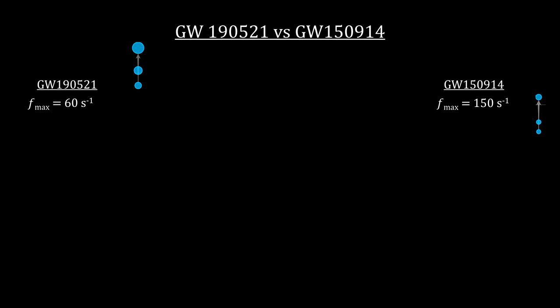The analysis shows that the merger included two black holes with 85 solar masses and 66 solar masses. The calculated mass of the remnant is 142 solar masses.